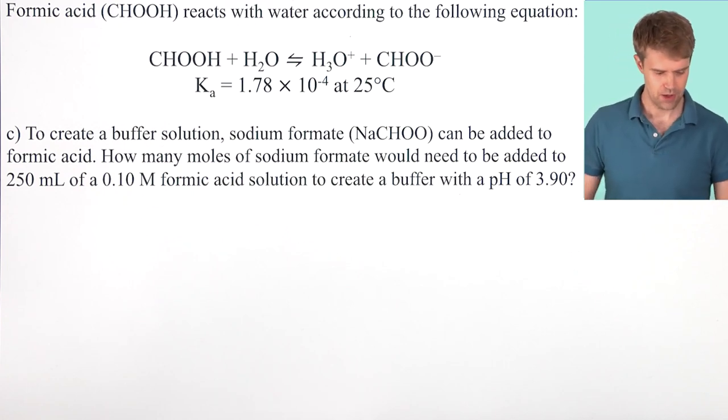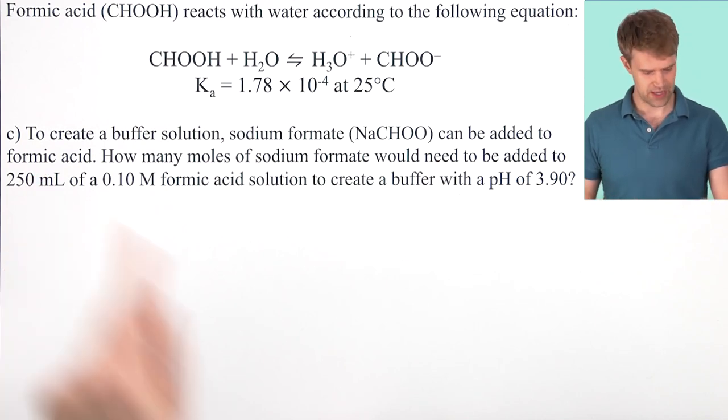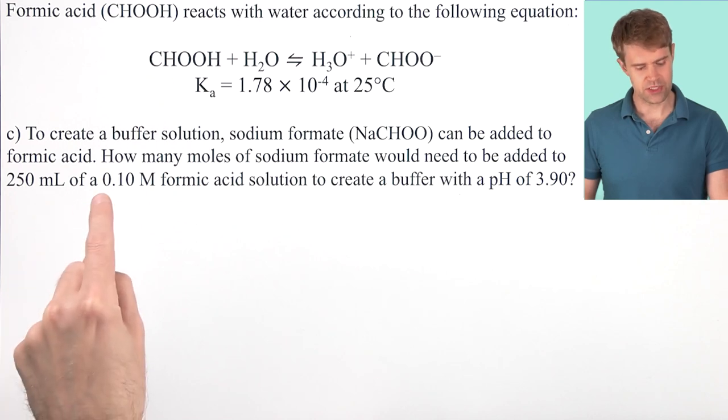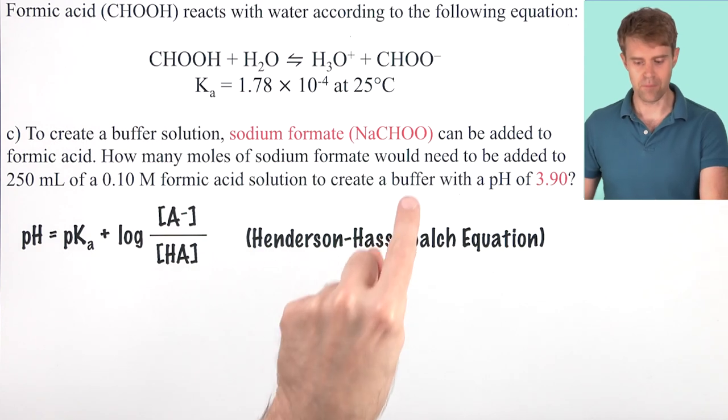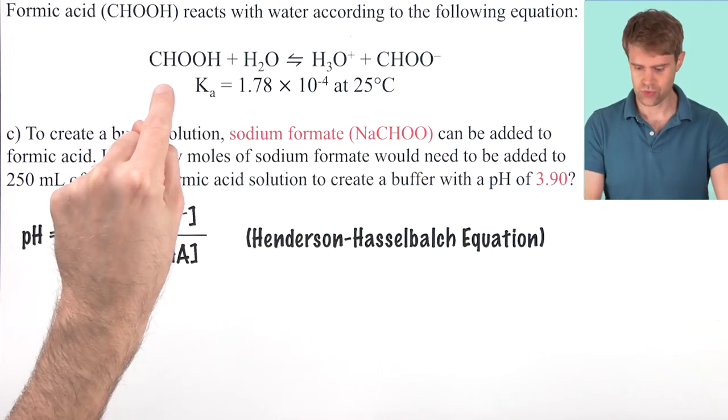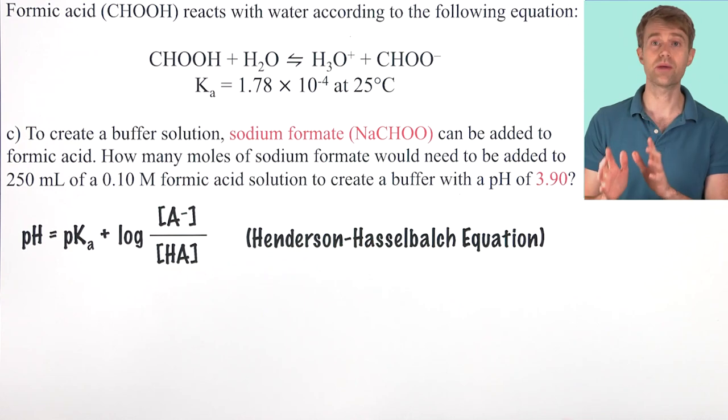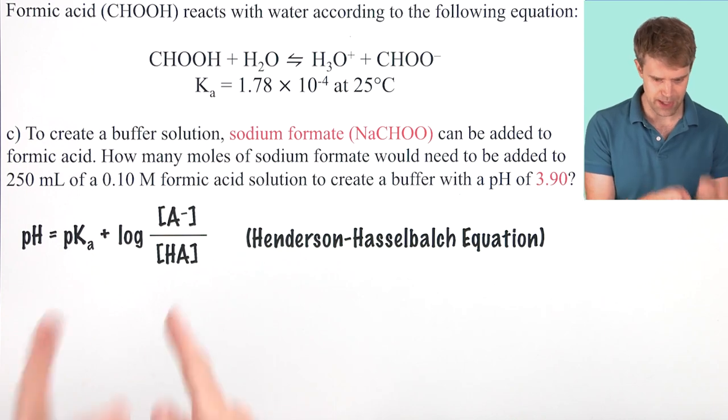Here is the third part. To create a buffer solution, sodium formate can be added to formic acid. How many moles of sodium formate would need to be added to 250 milliliters of a 0.10 molar formic acid solution to create a buffer with a pH of 3.90. Buffer. This is a buffer problem. We are going to be adding sodium formate to formic acid to create a buffer with a pH of 3.90. Now, like many buffer problems on the AP Chem exam, we are going to solve it by using the Henderson-Hasselbalch equation. And that is one of the equations that is given to you on the formula sheet.